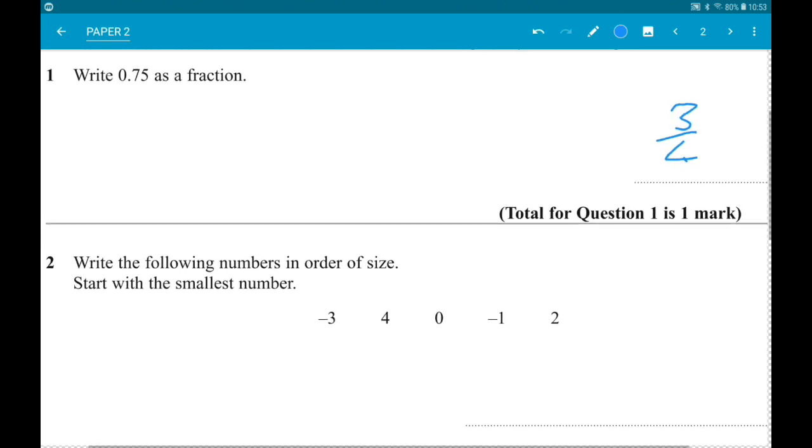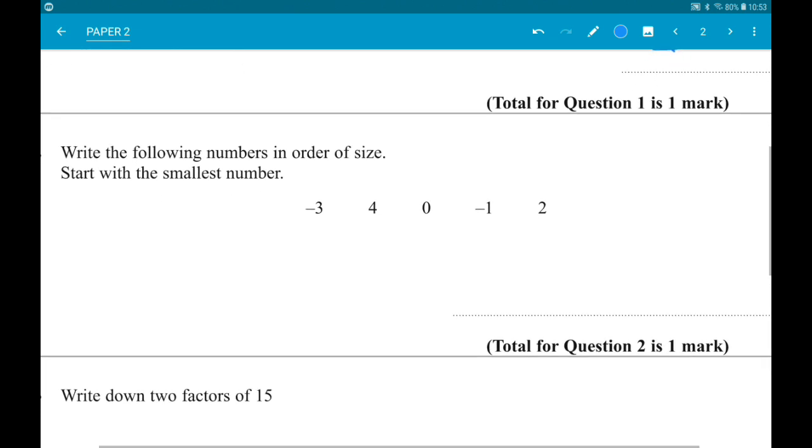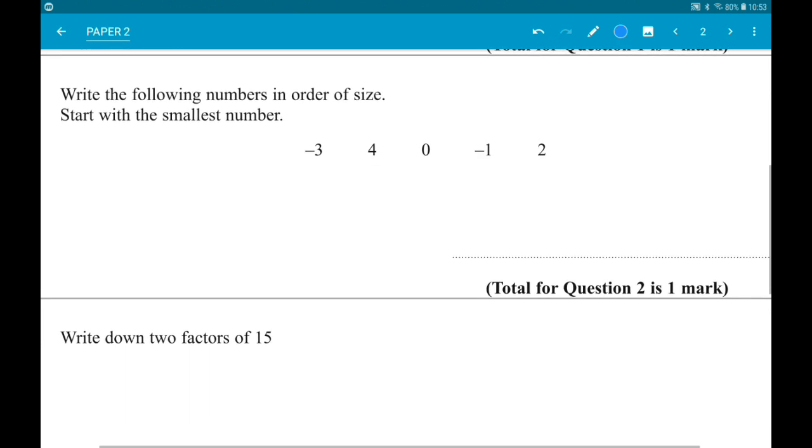Number 2: write these numbers in order of size, starting with the smallest number. So the smallest is minus 3, then minus 1, then 0.4.